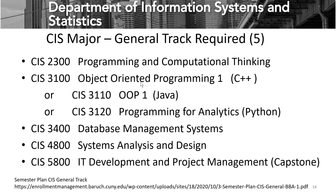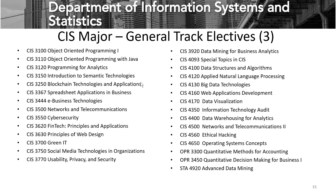Here's a look at the general track for CIS. The five required courses begin with CIS 2300, Programming and Computational Thinking. Then there's a choice of either object-oriented programming with C++ or with Java, or CIS 3120, Programming for Analytics, which teaches Python. Next is Database Management Systems, followed by Systems Analysis and Design. The final course, which we call a capstone and should be taken towards the end of the degree program, is called IT Development and Project Management. The general track offers the widest range of electives — pretty much any CIS course, including some OPR operations research and statistics courses.